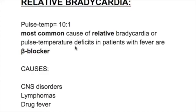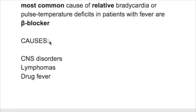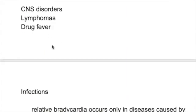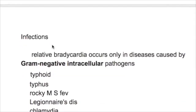The most common cause of relative bradycardia is use of beta blocker drugs. Other causes include CNS disorders, lymphoma, drug fever, and infections.